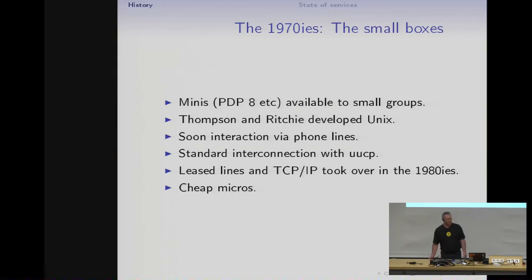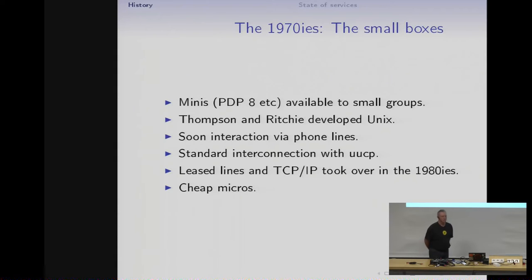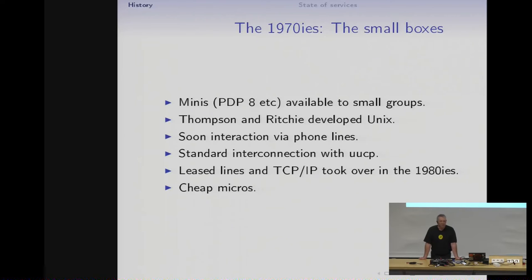In the 1970s, things got more interesting with mini computers. In the late 1960s, Digital Equipment built a machine called the PDP-8, which was the first real mini you could use for small groups. With these kinds of machines, Ken Thompson and Dennis Ritchie developed Unix, which was the start of what we now know as Linux and GNOME. These minis could communicate with each other using phone lines, and later leased lines. By the end of the 70s, they had a standard called Unix-to-Unix Copy, UUCP — a kind of store-and-forward network.